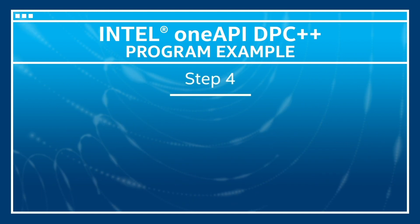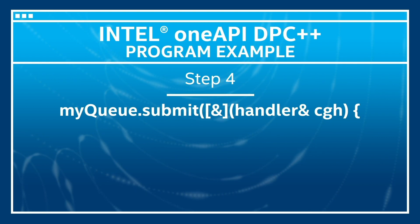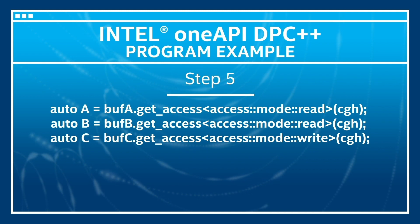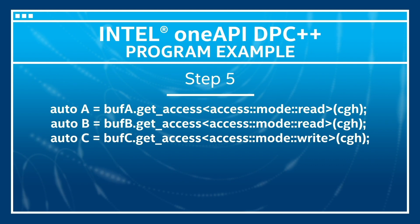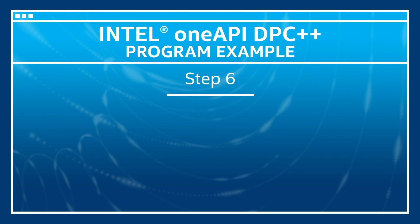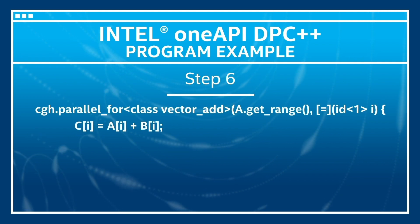For step 4, you can now start submitting the work to the device by calling the submit method and providing it a lambda object. Step 5 is to create accessors to the buffer inside the lambda object in order to access the buffer data on the device. This provides runtime info about how the kernel will work with the buffer data. Step 6 is to then send the kernel for execution by calling the parallel_for method to execute them in parallel.